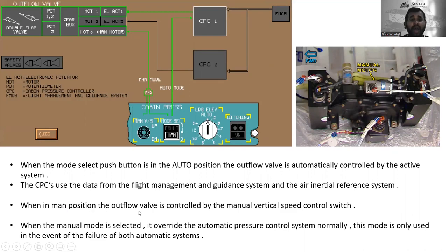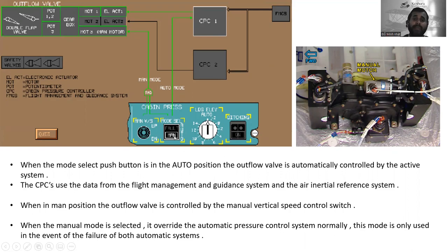When in manual position, the outflow valve is controlled by the manual vertical speed control switch. Selecting manual mode overrides the automatic pressure control system. This mode is only used in the event of failure of both automatic systems.